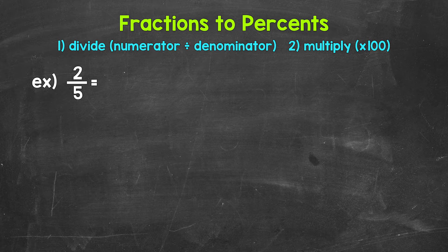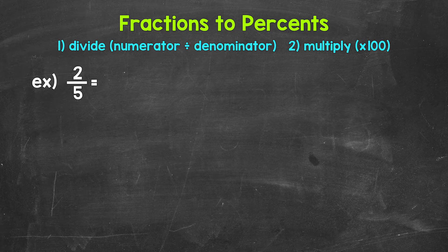Now when we convert a fraction to a percent, we can start by dividing the numerator, the top number of the fraction, by the denominator, the bottom number of the fraction. This will give us a decimal. Once we have that decimal, we convert it to a percent by multiplying it by 100. And a quick way to multiply by 100 is to move the decimal twice to the right.